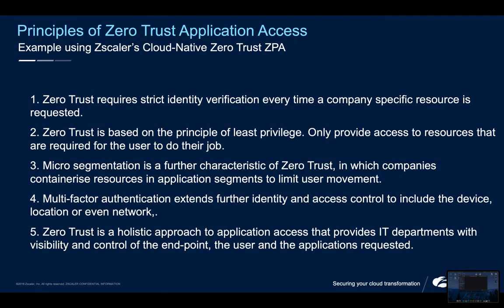Let's touch on what the main principles are in Zero Trust. Zero Trust requires strict identity verification every single time a company-specific resource is requested. Zero Trust is based on the principles of least privilege, which means you should only be providing access to the resources that your users need to do their jobs. Micro-segmentation is a further characteristic of Zero Trust in which companies containerize resources and application segments to limit user movement. Multi-factor authentication extends further identity and access control to include the device, the location, or even the network.